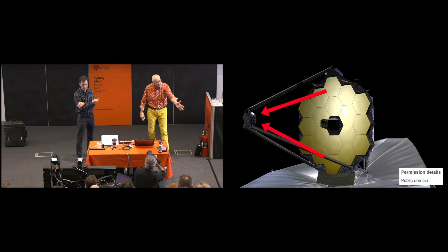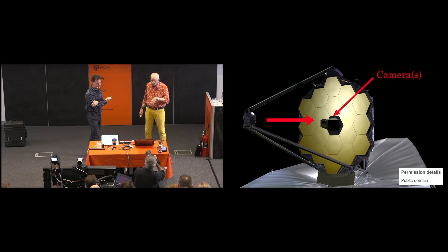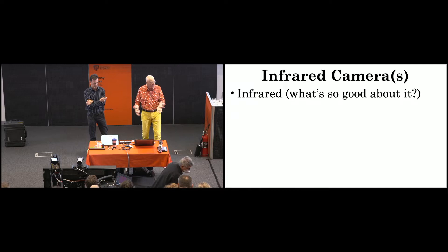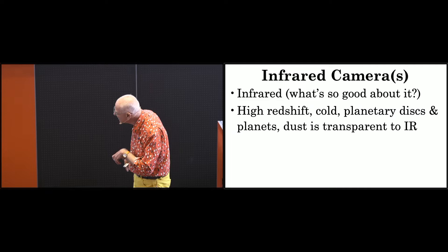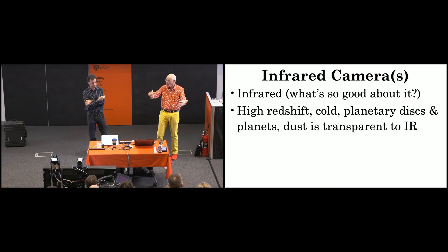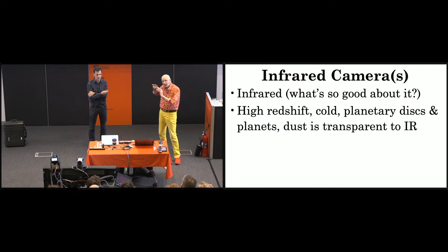We're talking infrared cameras. Why do they want to go for infrared? Infrared gives you high redshift - you measure redshift with Z. Twenty is a high redshift, really close to the edge of the universe. Cold - infrared can pick up cold stuff, planetary disks. And the weird thing, infrared goes through dust. Dust is transparent to infrared. There are actually four science instruments. Here's one called NIRCam, and here we've got MIRI, the middle one.